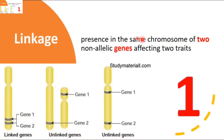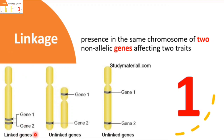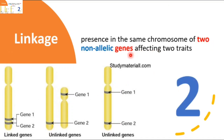The first thing you need to know is that there are two genes that are linked. Say for instance, we have here a chromosome. We have four chromosomes here — chromosome 1, 2, 3, and 4. You see that there are two genes present, gene 1 and gene 2. Notice that among these four chromosomes, only chromosome 1 contains the linked genes. So that's for number one: there are two genes that are linked.